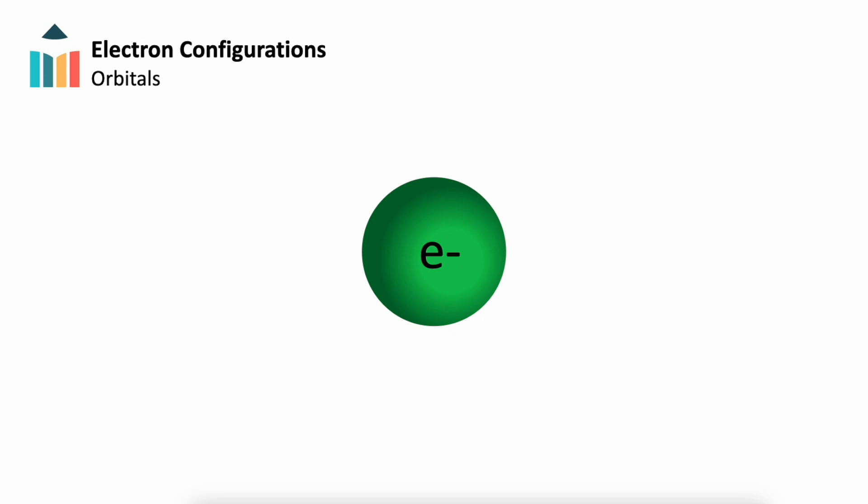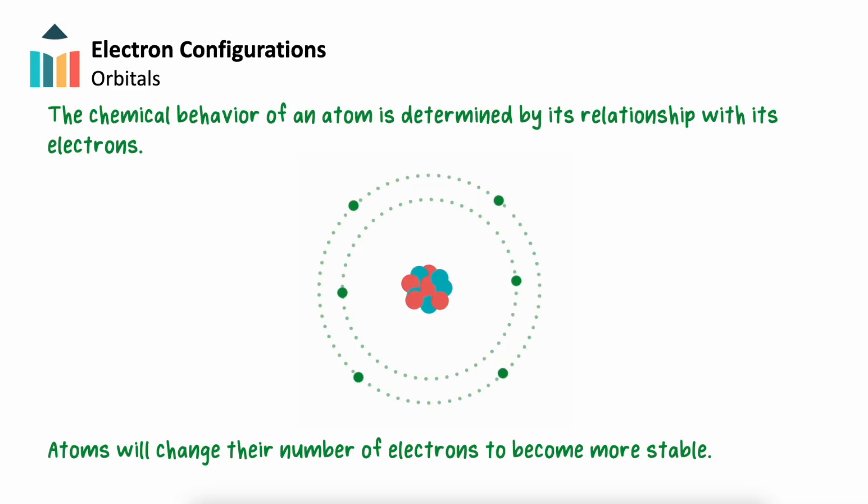Electrons are a fundamental particle that have a mass of 9.11 x 10^-31 kg and a charge of negative 1. Understanding the electron is essential to understanding chemistry. The behavior of an atom is determined by its relationship with its electrons, as an atom will change the number of electrons it has to become more stable.